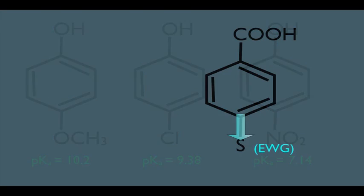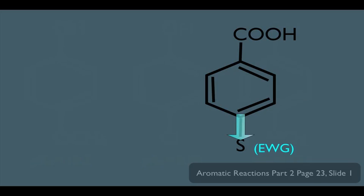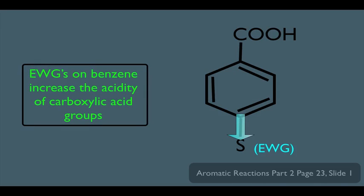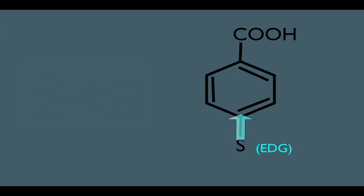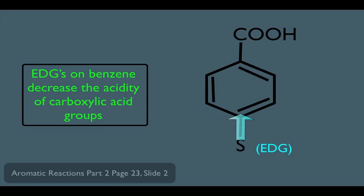Now the same is true for carboxylic acids on a benzene ring. When a carboxylic acid, COOH, donates a proton, it's left over as COO-, so again an electron withdrawing group will pull those electrons away and spread them out further. So we get the same result: electron withdrawing groups on benzene increase the acidity of carboxylic acid groups. And just like we saw in alcohols, the opposite is true — electron donating groups donate electrons to the ring, and EDGs on benzene decrease the acidity of carboxylic acid groups.